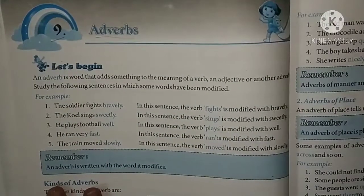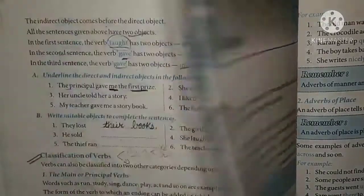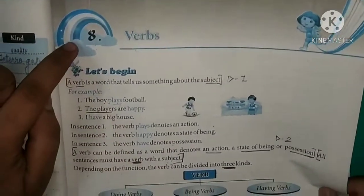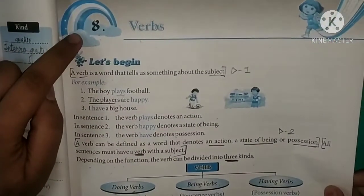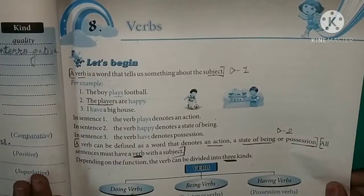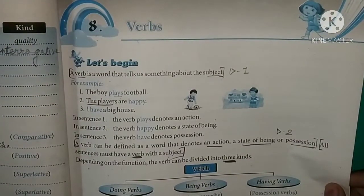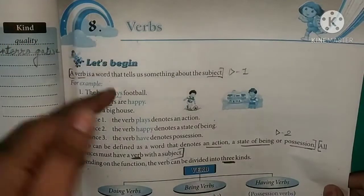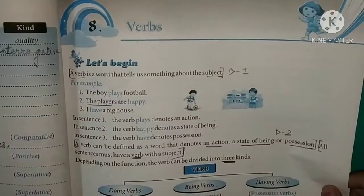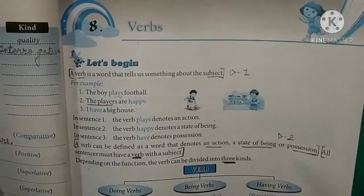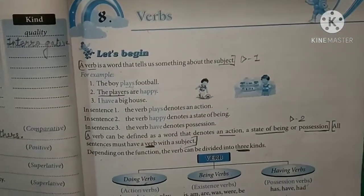In the previous lecture we did Chapter Number 8. We covered verbs — verb means a word that performs an action, the word that indicates the action. In verbs we also covered transitive verbs and intransitive verbs.